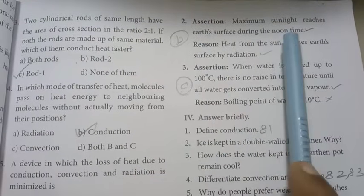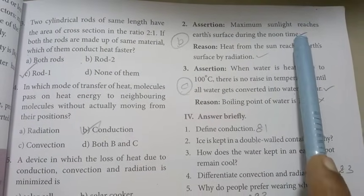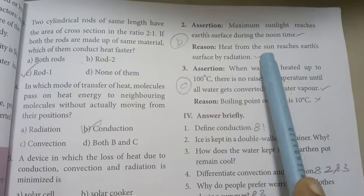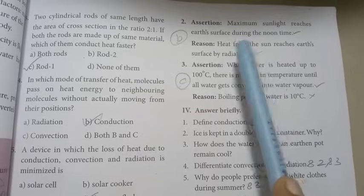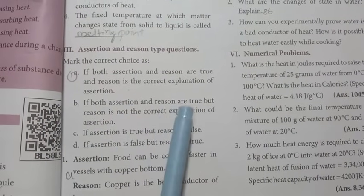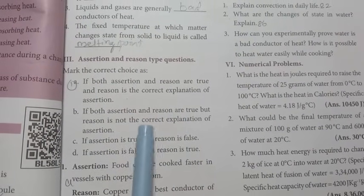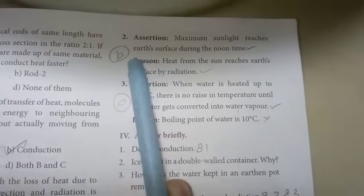Second, assertion: Maximum sunlight reaches earth's surface during the noon time. Assertion right. Reason: Heat from the sun reaches earth's surface by radiation. This statement is correct. But, one of the reason is correct. B option is the right answer. Both assertion and reason are true, but reason is not the correct explanation of assertion. Second one, B option is the right answer.